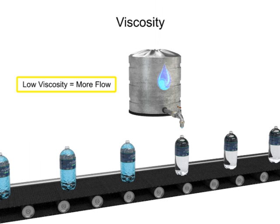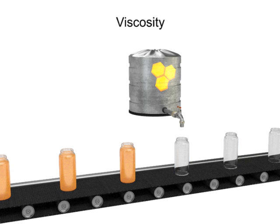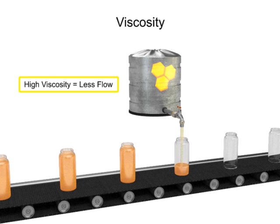Fluids with low viscosity flow very easily. Water is a type of fluid with low viscosity. Fluids with high viscosity are more resistant to flow. Honey is a type of fluid with a high viscosity. Therefore, honey is more viscous than water.